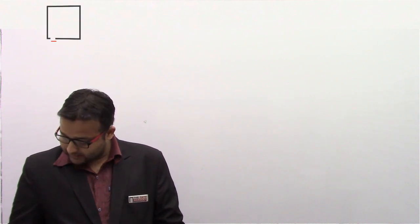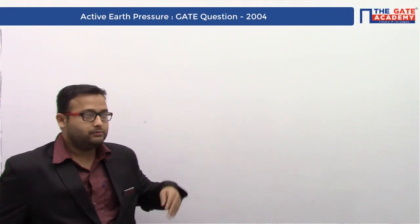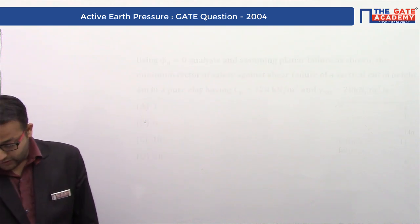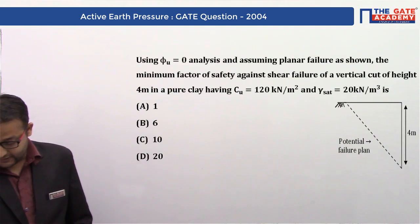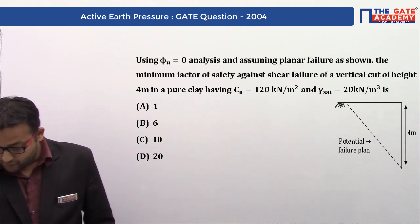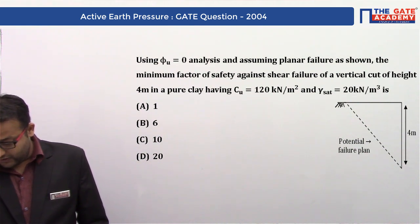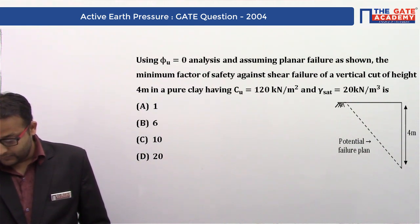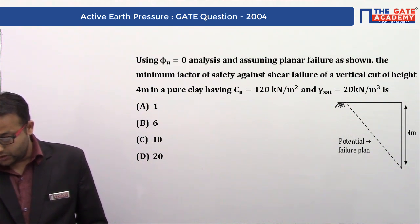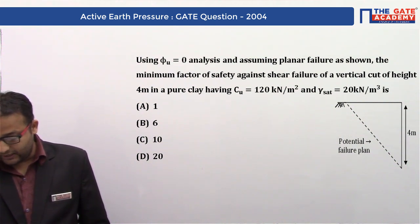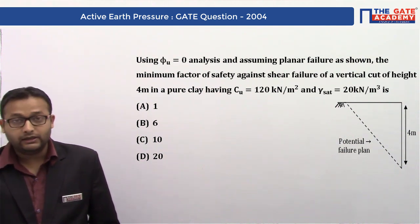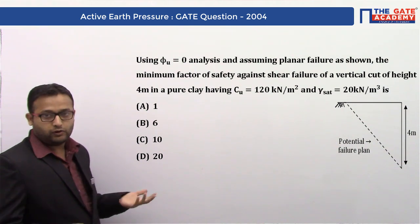Hello friends, today we solve a problem asked in GATE 2004 in civil engineering from the subject geotechnical engineering. The problem states: using φ equal to zero analysis and assuming a planar failure as shown, find the minimum factor of safety against shear failure of a vertical cut of height 4 meters in a pure clay having c equal to 120 kN/m² and γ_sat equal to 20 kN/m³. A figure is also given along with four options.